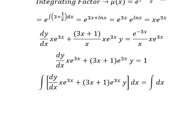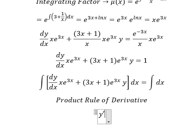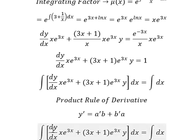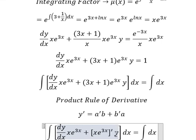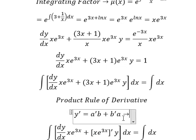Next, we can use the product rule of derivatives. We have the first derivative of y equals the first derivative of a multiplied by b plus the first derivative of b multiplied by a. If we look carefully at this one, this is the first derivative of a multiplied by b. This one is the first derivative of b multiplied by a. So the integration of this one...